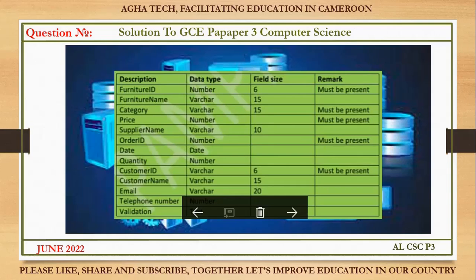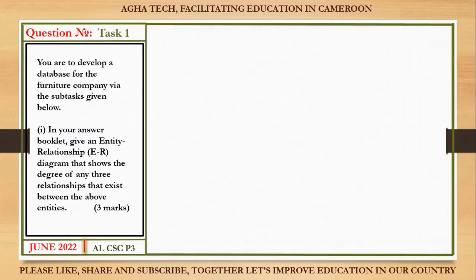They've given us the attributes with descriptions, data types — meaning which type of value that field can hold — and the size, meaning the maximum number of characters that field can contain. They've also given us some remarks. In some fields there are remarks stating what must be present. We'll explain the remarks as we go.